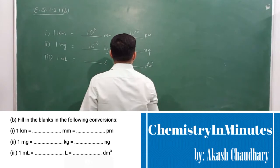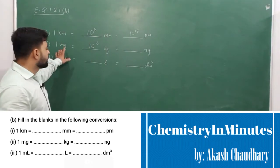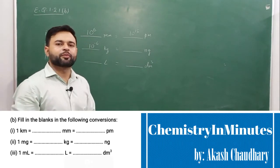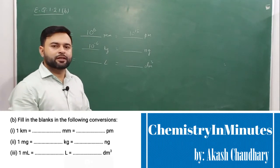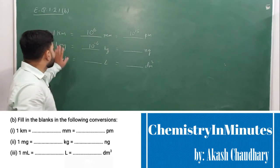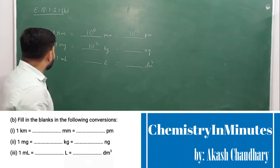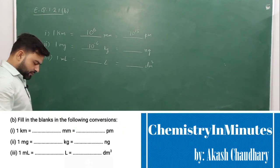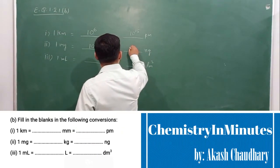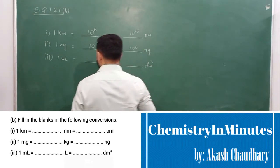And here, 1 nanogram. We have to relate milligrams with nanograms. 10 raised to the power minus 9 grams is equal to 1 nanogram, and 10 raised to the power minus 3 grams is equal to 1 milligram. Dividing, this will come as 10 raised to the power 6 nanograms.